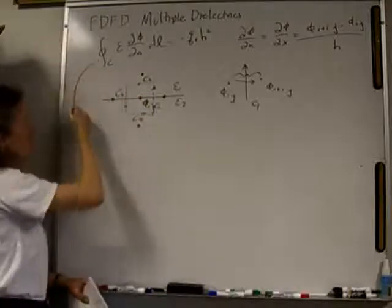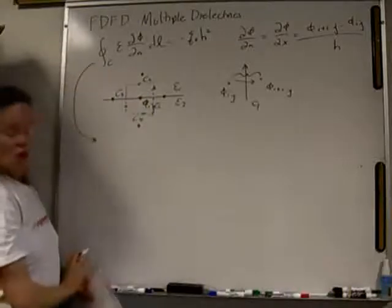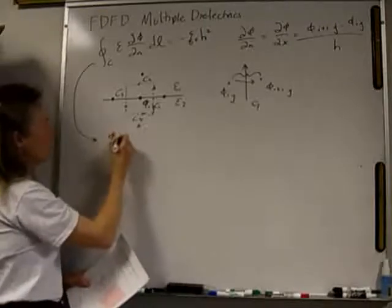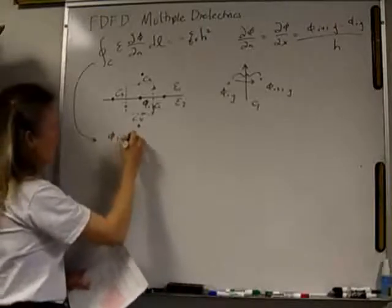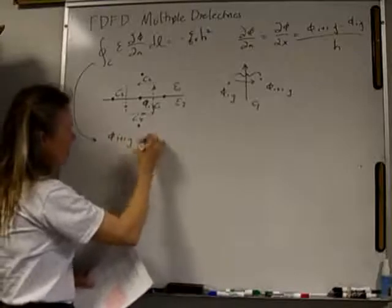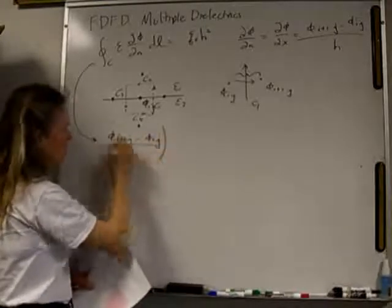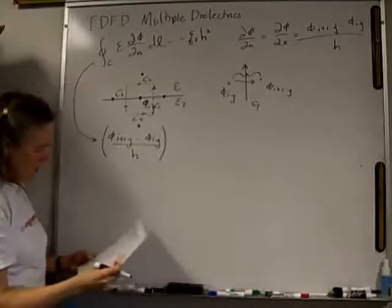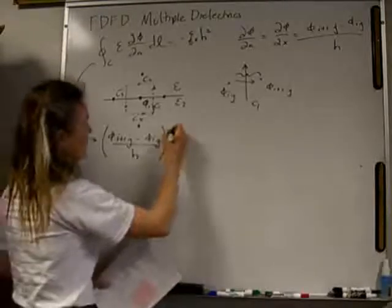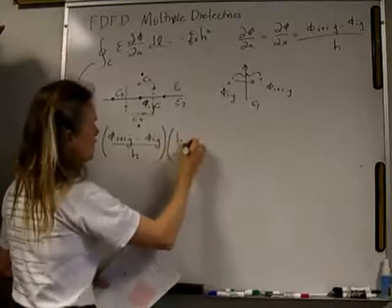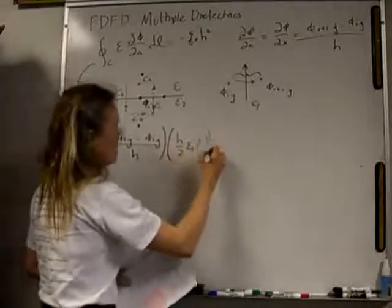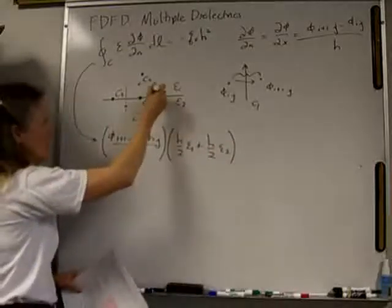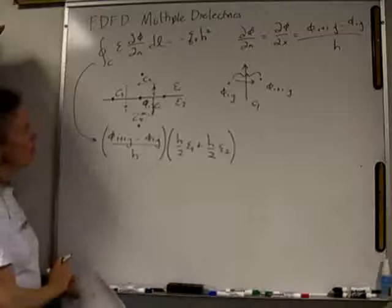So let's write this equation right here using our normal derivatives. First, for C1, this is going to be phi I plus 1J minus phi IJ divided by H. And I also have to multiply this by the epsilon. So this is going to be H over 2 times epsilon 1 plus H over 2 times epsilon 2. I'm just doing this piece and then that piece. So there's my first part of the contour.